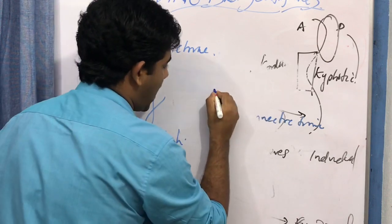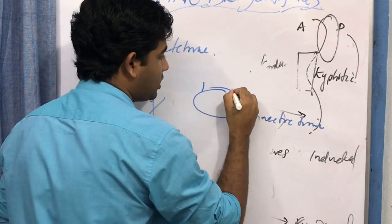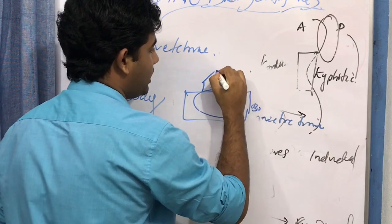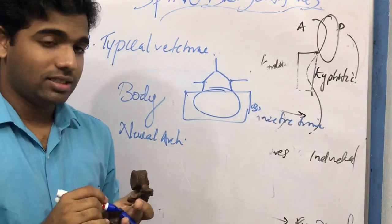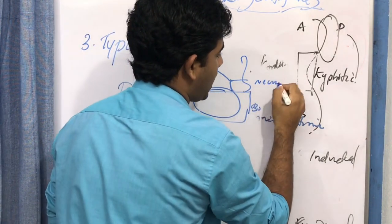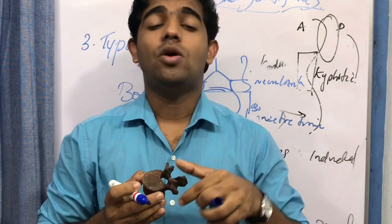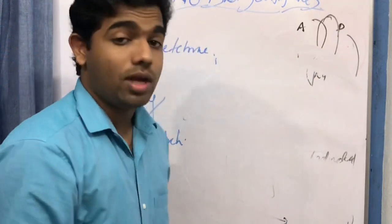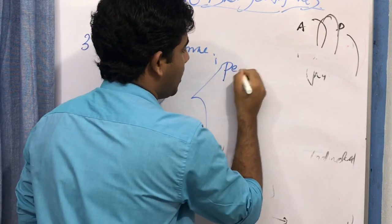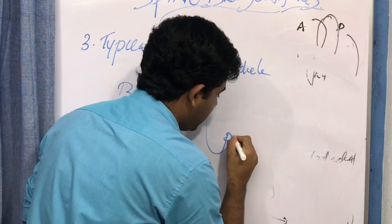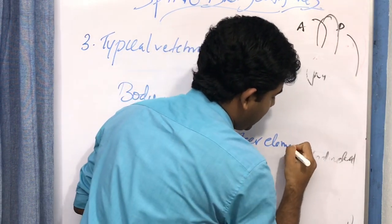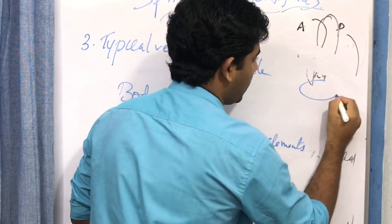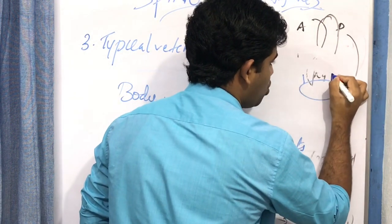Posterior to the body of the vertebra we have the neural arch, which consists of all the structures projecting from and behind the body — including the pedicles, laminae, spinous process, articular processes, and transverse processes. The neural arch is made up of two main parts: the pedicle and the posterior elements.